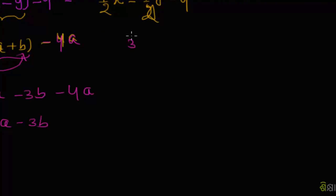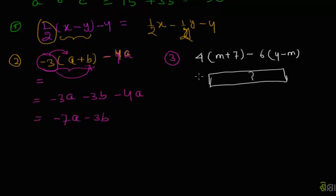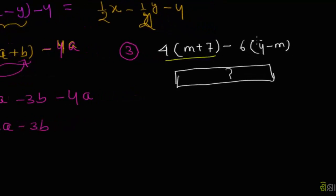Problem 3: We have 4(m+7) - 6(4-m). First, we need to expand this bracket and then simplify.